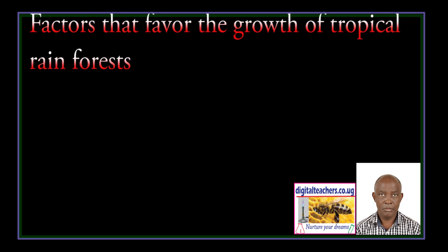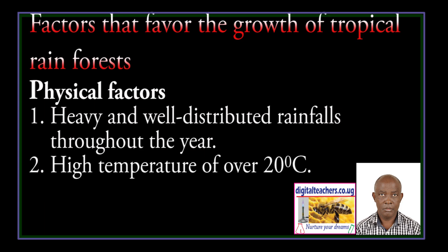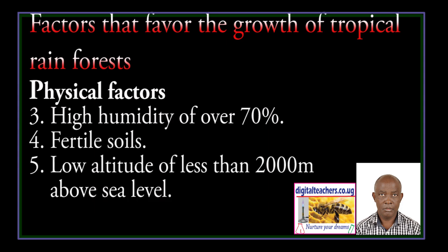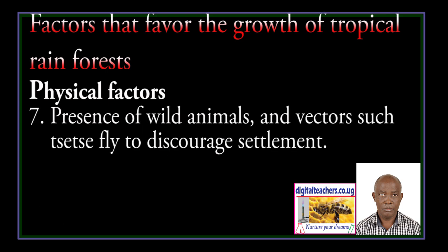Factors that favour the growth of tropical rain forests — Physical Factors: Heavy and well-distributed rainfall throughout the year. High temperature of over 20 degrees Celsius. High humidity of over 70%. Fertile soils. Low altitude of less than 200 meters above sea level. Presence of wild animals and vectors, such as tsetse fly, to discourage settlement.